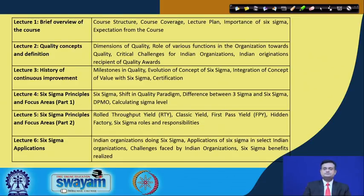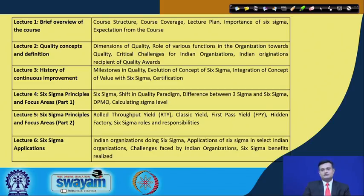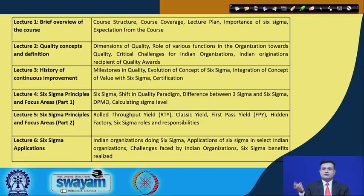We also saw critical concepts in lecture 4 and 5 — Six Sigma principles and focus areas — including the difference between three sigma and six sigma, what is DPMO, how to calculate the sigma level, and concepts like rolled throughput yield, FPY (first pass yield), hidden factory, and others. Lecture 6 covered Six Sigma applications with examples of Indian organizations that implemented Six Sigma and realized various benefits.